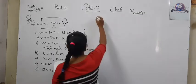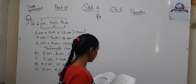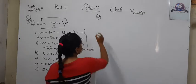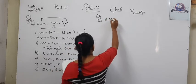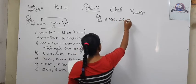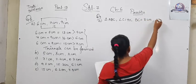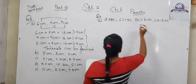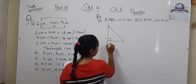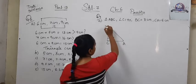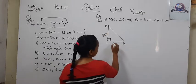Now question number 7: find the length of the hypotenuse in the following right triangles. In triangle ABC, angle C is equal to 90 degrees, BC is equal to 8 cm, and CA is equal to 6 cm. So triangle ABC is a right angle triangle where angle C is 90 degrees. BC is 8 cm and CA is 6 cm.